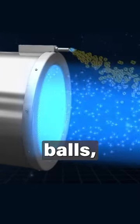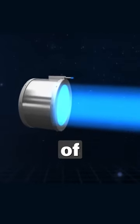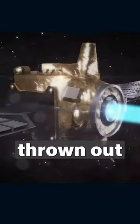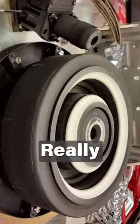In a Hall Thruster, it is not tennis balls, but tiny charged bits of xenon gas getting thrown out. When these bits are shot out really fast, the spacecraft moves the opposite way.